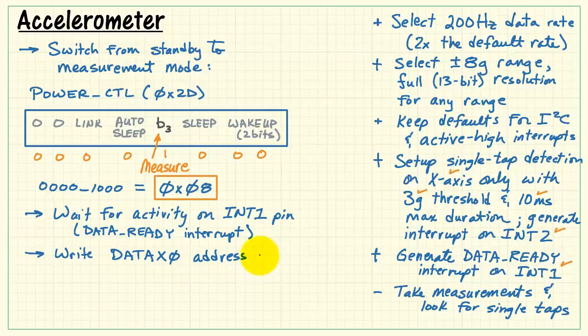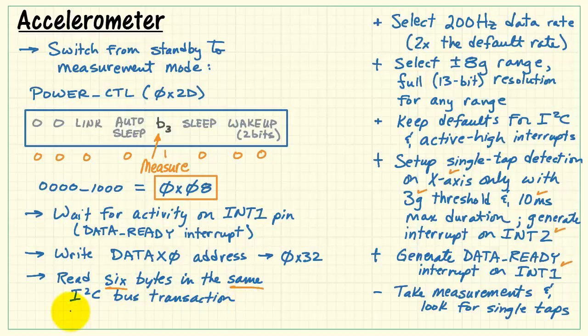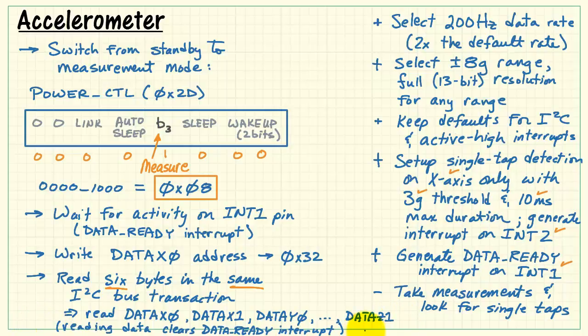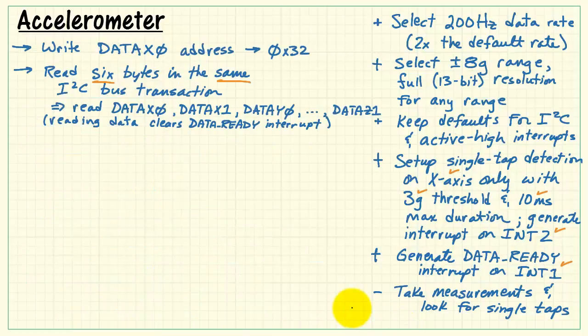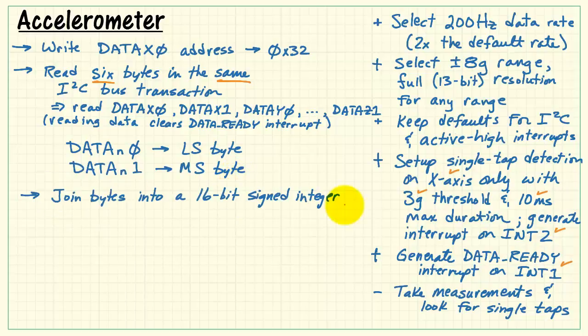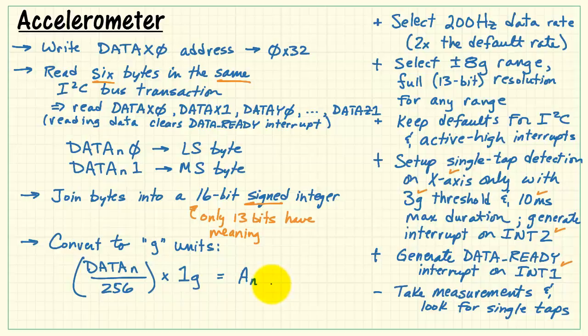We wait for activity on the interrupt number 1 pin. That's where the data ready interrupt was mapped. And then once you detect activity, you write the address of the data X0 register. After that, you read 6 bytes in quick succession in the same I2C bus transaction. It's important to get all 6 bytes out as rapidly as possible. These read out in the order of data X0, data X1, data Y0 and Y1, and then finally Z0 and Z1. Reading the data means that the data ready interrupt gets cleared. Now, data 0 for any one of these is the least significant byte, and data 1 is the most significant byte. You join these bytes together into a 16-bit signed integer. It's important to remember that it is signed. Also, only 13 of the bits have meaning. You then convert to G units by taking the data value, dividing by 256, and multiplying by 1G. That gives us the acceleration in Gs.